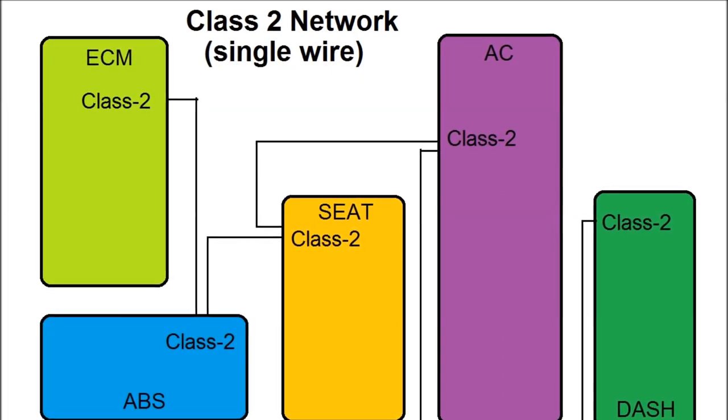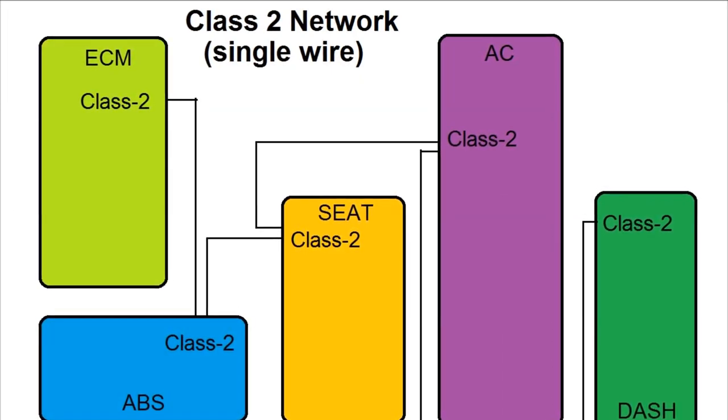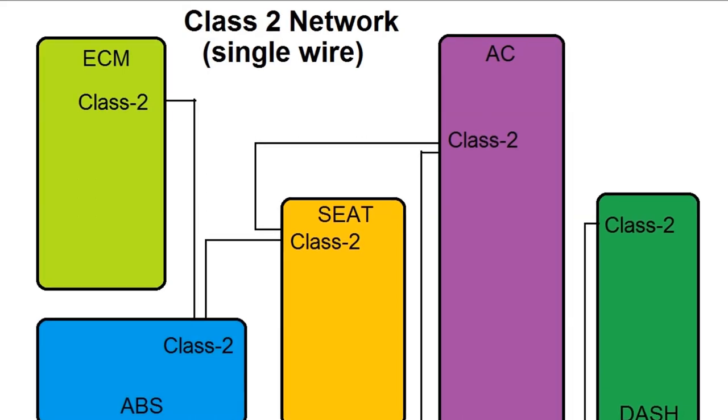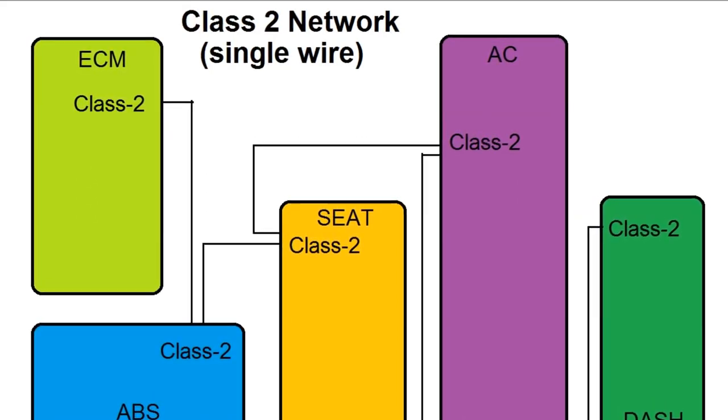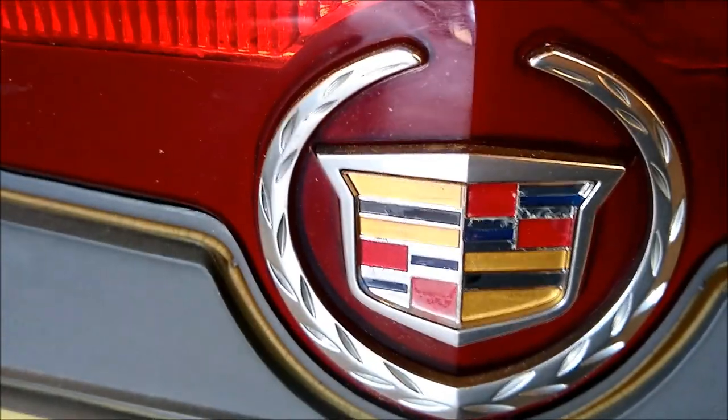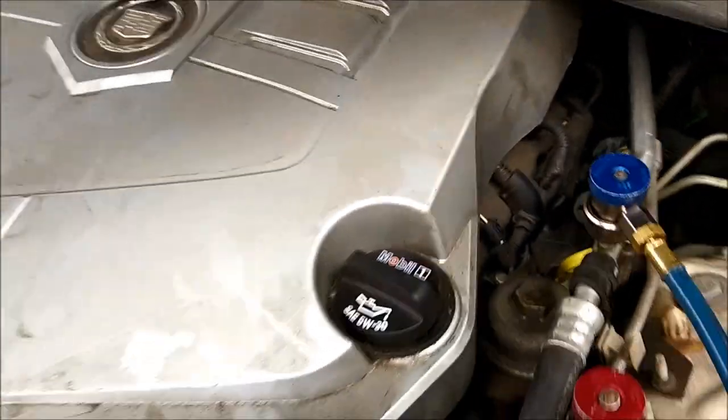This was a fairly straightforward video to show you a little bit about Class 2 networks, which are still in use for slower General Motors vehicles. It may eventually be replaced with a LIN network, but it's still viable and a good thing to learn.